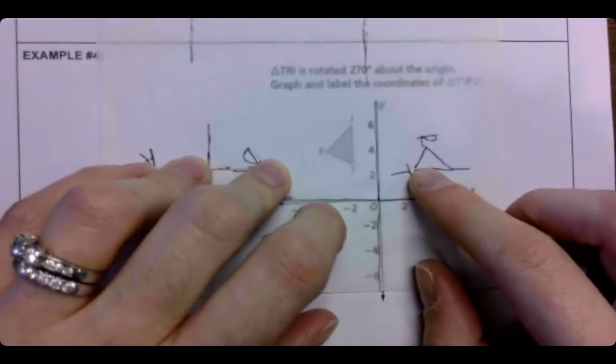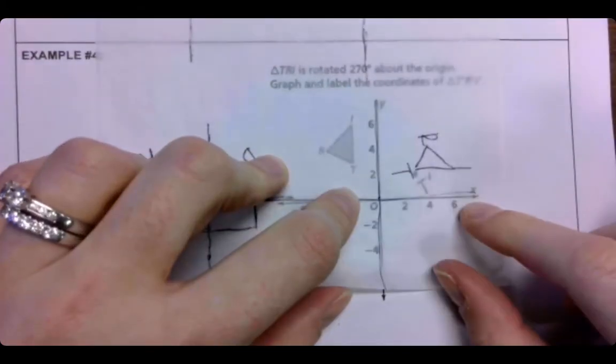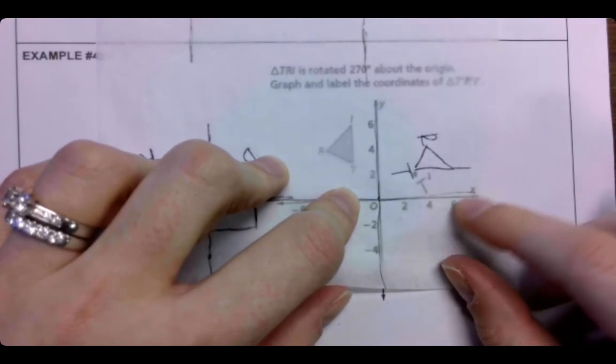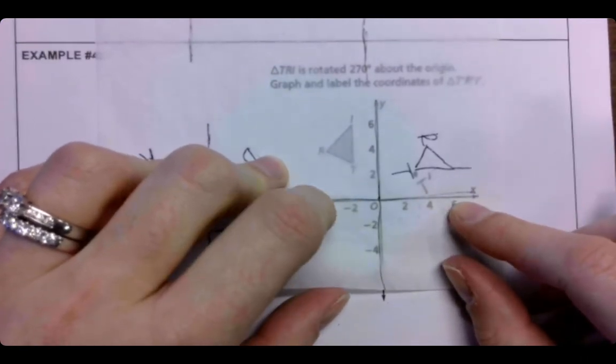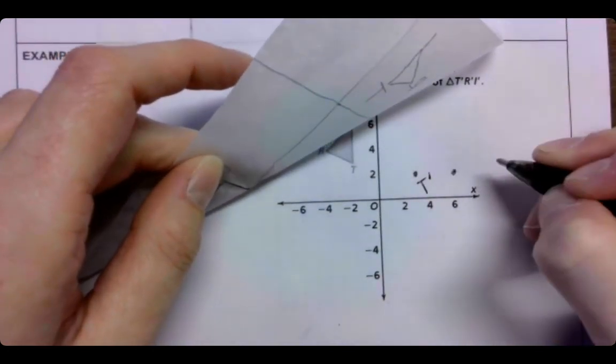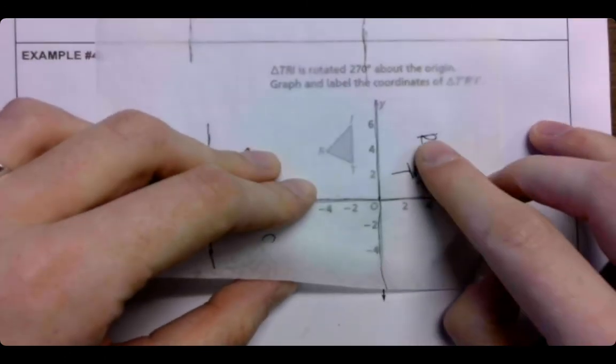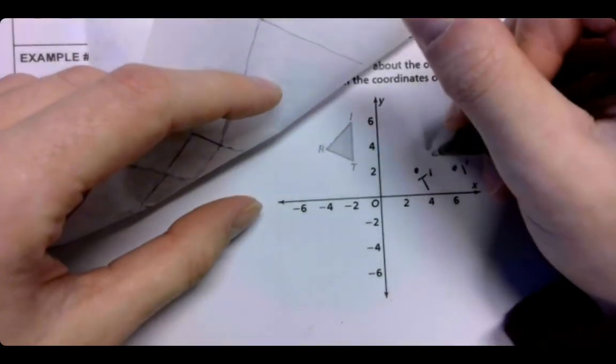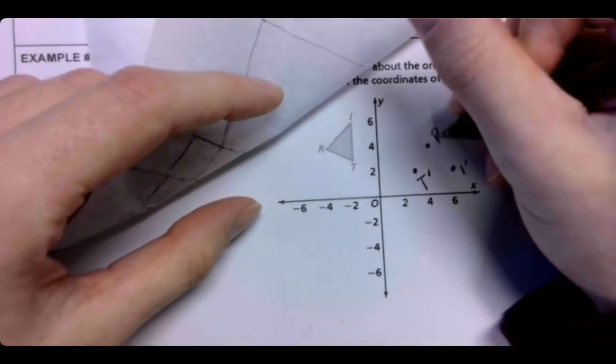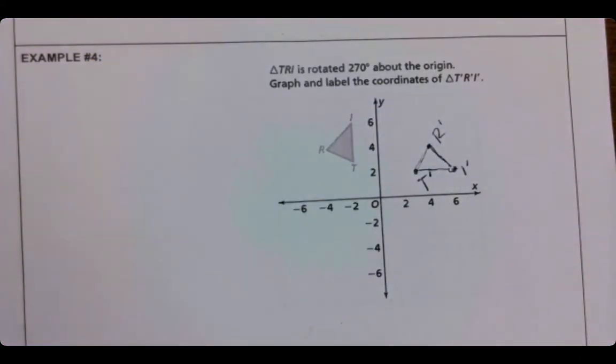Meaning our T is now at 3, 2. Oh, it's hard to see that, isn't it? Our I or J or L, whatever that is, is at 6, 2. And then R is up top at 4, 4. And that's what you should have. Okay? So, our goal today is to work on an IXL for this. Great job.